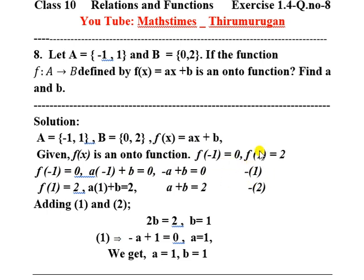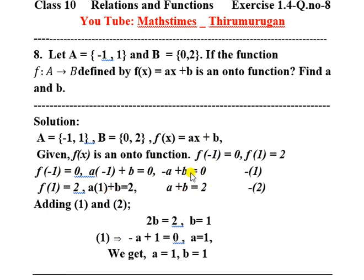For equation 2: f(1) = 2, so a × 1 + b = 2, giving a + b = 2. This is equation number 2.